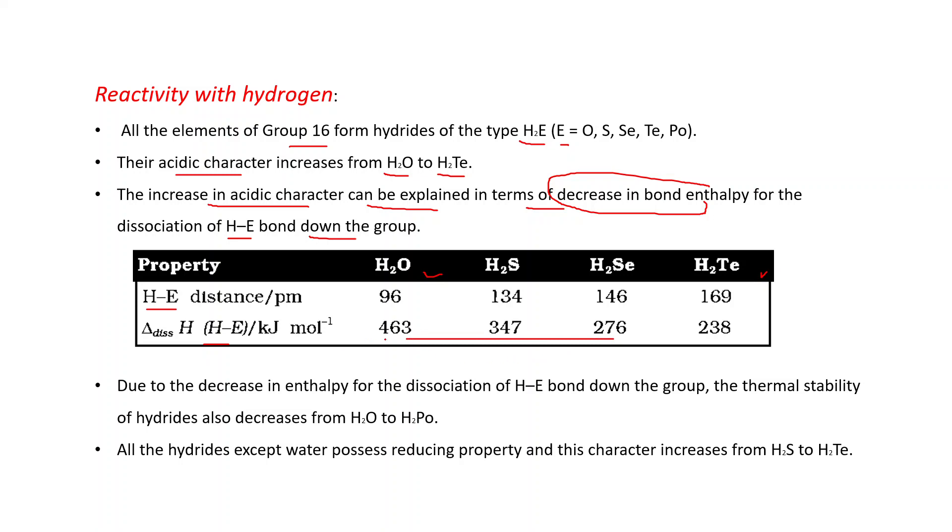Due to this decrease in bond dissociation enthalpy, thermal stability also decreases from H2O to H2Po. All the hydrides except water possess reducing property and this character increases from H2S to H2Te. Three properties: acid character increases from H2O to H2Te, thermal stability decreases from H2O to H2Po, and reducing properties also increase from H2S to H2Te. These depend on bond length and bond dissociation enthalpy.